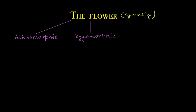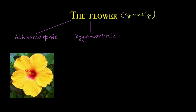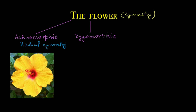When the arrangement is symmetric, the flower can be of two types: actinomorphic and zygomorphic. What is actinomorphic? There is a radial symmetry in the flower. Radial symmetry means there is more than one plane which can divide the flower into two equal parts. So actinomorphic has radial symmetry, and there are more than one planes which can divide the flower into two equal parts.